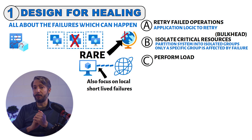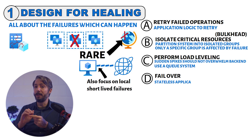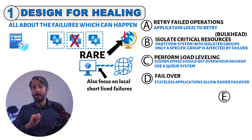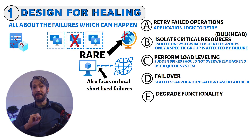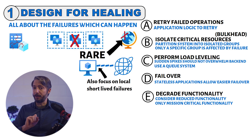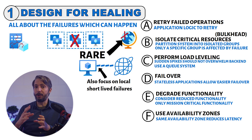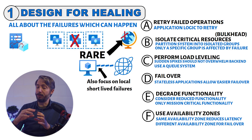Another important item is to perform load leveling — ensure that sudden spikes in traffic do not overwhelm the backend. Use a queue system to smooth out that peak load. Consider stateless applications, as they allow easier failover. Also consider degraded functionality — if you can't work around the problem, consider reducing functionality so that only mission-critical parts of the application remain available while others are disabled, avoiding huge impact. Additionally, use availability zones — you can provision resources in the same availability zone to reduce latency, or use availability zones as a means to failover to another data center.